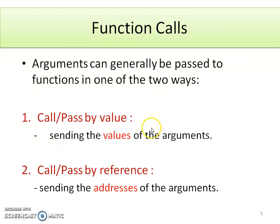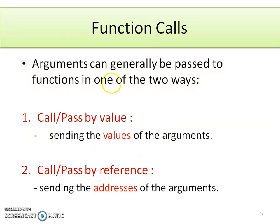For function calls there are two types. The first one is call or pass by value, where we send the values of the arguments to the function. The second type is call by reference, where we send the addresses of the arguments to the function.